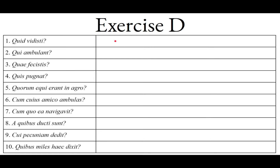Sententia prima: Quid vidisti? It may be helpful to identify what sort of pronouns we're dealing with, because this is the pronoun review. Quid is going to be an interrogative pronoun because we're asking a question. This is the neuter form: quid, cuius, cui, quid, quo. This can either be the nominative or it can be the accusative.